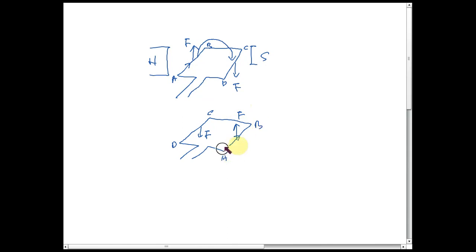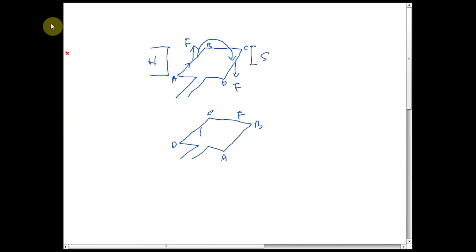That is the problem: after a half rotation the current still moves from A to B, so to avoid this we use the split ring commutator. The split ring commutator changes the direction of the current — where current was going in, it now comes out. This reverses the direction of the force, so the coil continues to rotate clockwise continuously. That is the function of the split ring commutator.